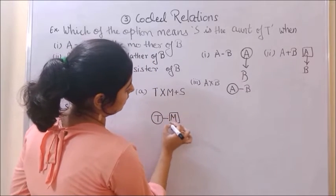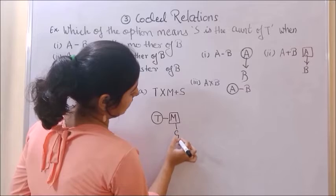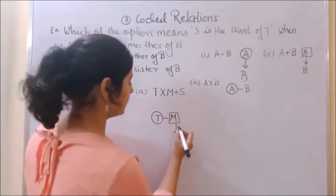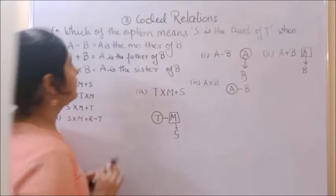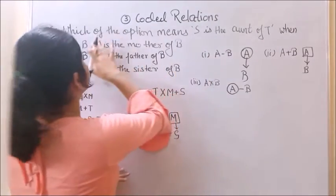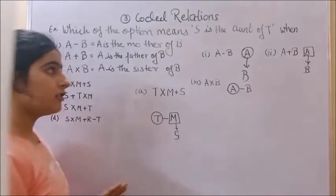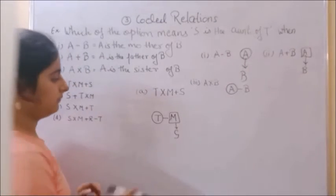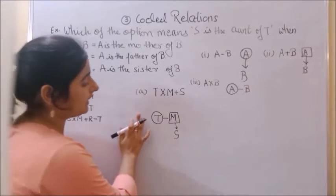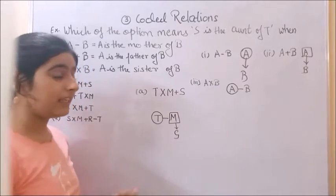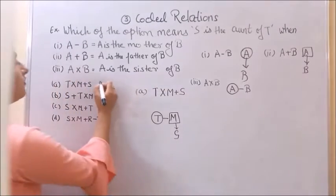M is male, father of S. Now our question says which option means S is the aunt of T. But here it's the opposite - T is the aunt of S. Therefore, the first option is wrong.